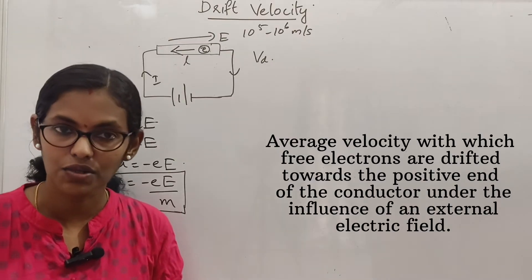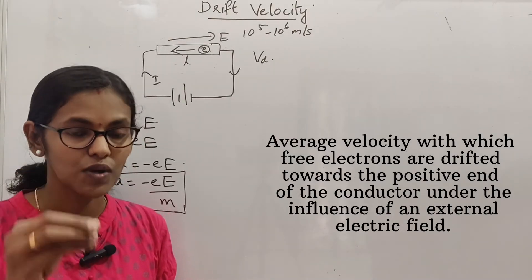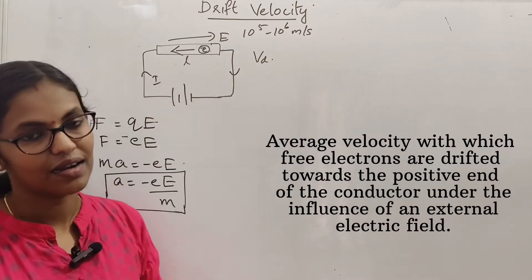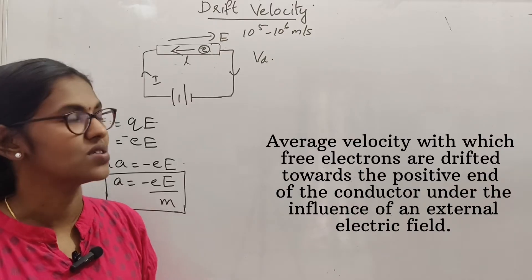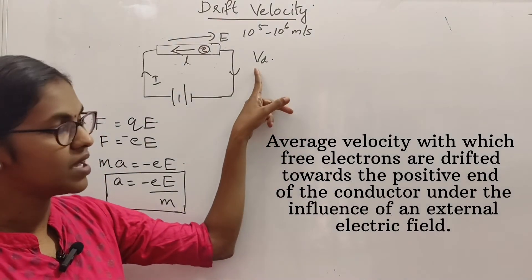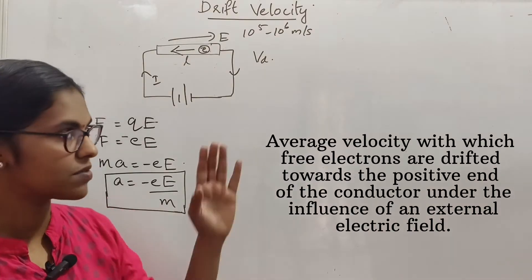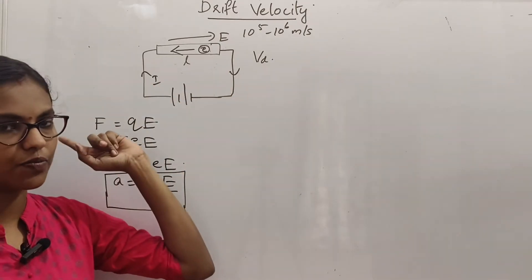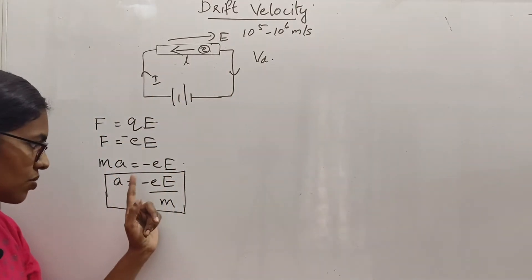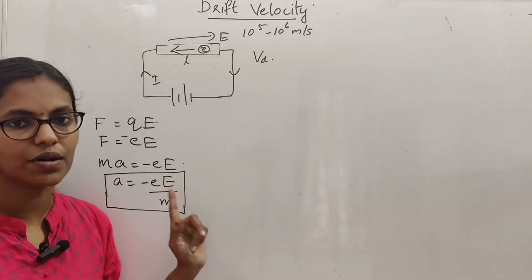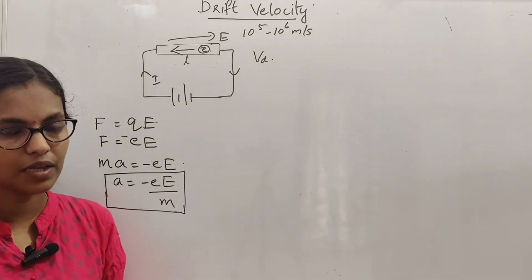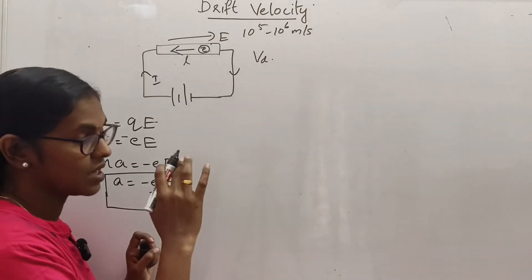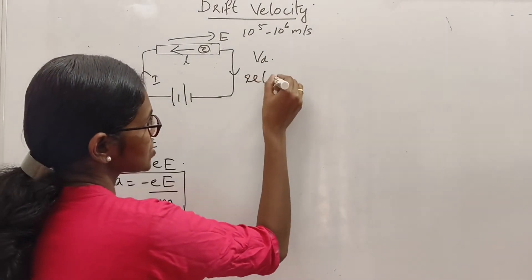The drift velocity is the average velocity of electrons drifted towards the positive end of the conductor under the influence of an external electric field. That is known as the drift velocity, denoted by Vd. The electrons are drifted under the acceleration a is equal to minus e divided by m, over a short time interval called the relaxation time.